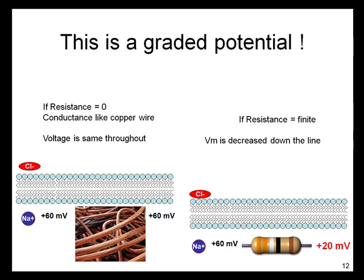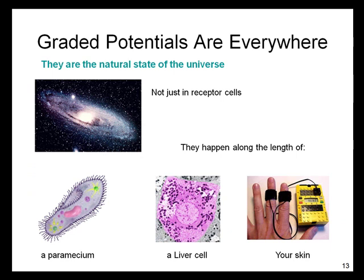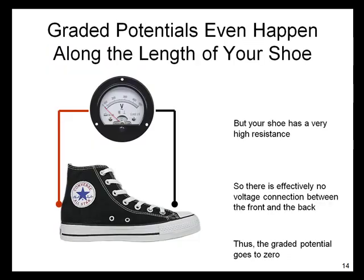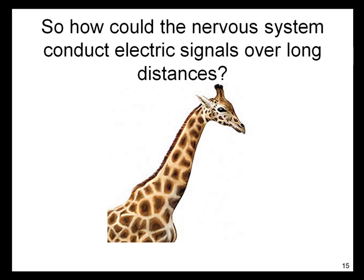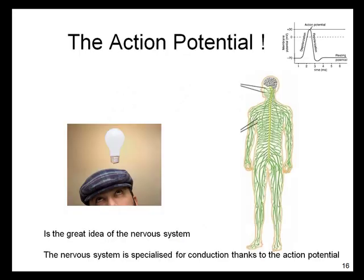Compare that to neurons with action potentials — action potentials are all or none. The point of graded potentials is that they are everywhere; they are the natural state of the universe. Graded potentials are not just in receptor cells. They happen along the length of a paramecium, along a liver cell, along your skin. Graded potentials even happen along the length of your shoe, but your shoe has a very high resistance. So the voltage differences disappear over macroscopic distances. Thus, the graded potential goes to zero. So, how could the nervous system conduct electrical signals over long distances, especially given that graded potentials are always diminishing over distance? By using the action potential.